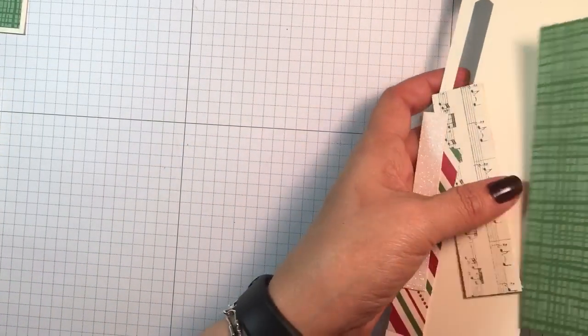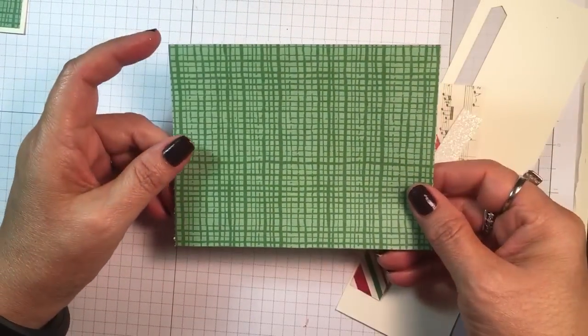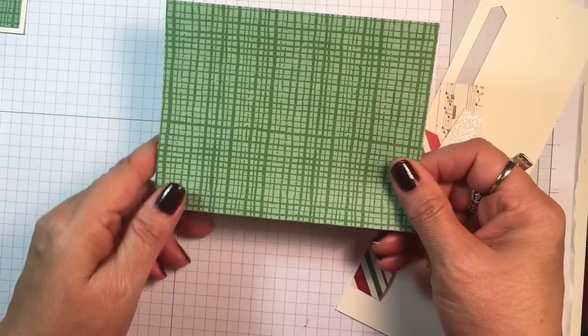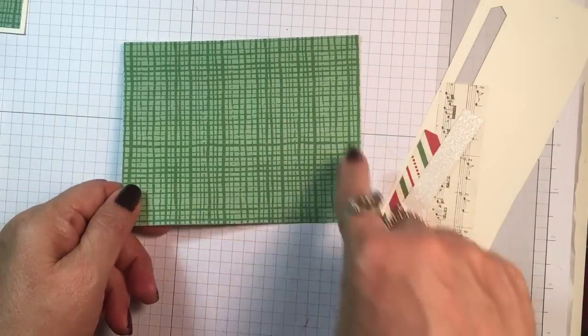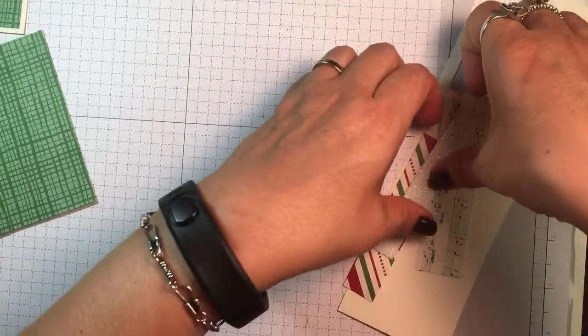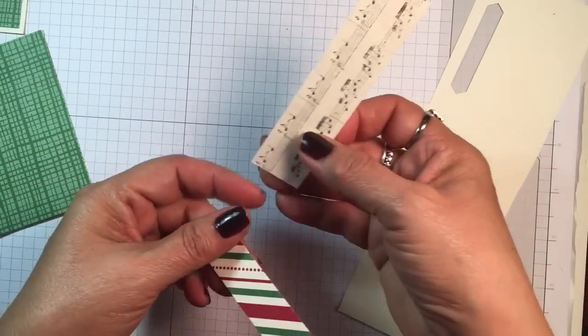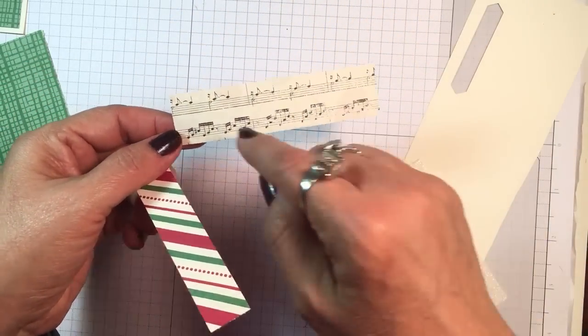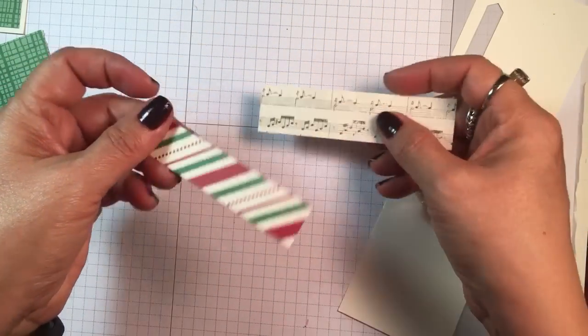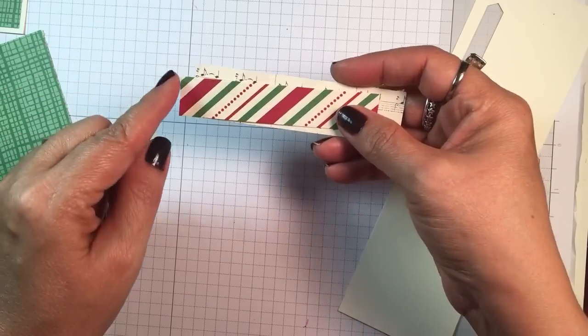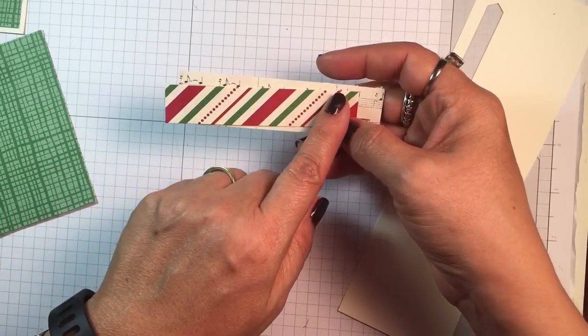I have some of the Christmas specialty paper that's in the annual catalog. This piece is cut at four by five and a quarter, and then I have two more little strips. This is cut at one inch by four inches, this one at three quarters of an inch by three and three quarters inches.